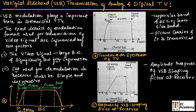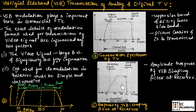Figure C shows the response of the vestigial sideband shaping filter at the receiver. This is the spectrum reproduced by the filter available at the receiver end. As you can see, we have the picture carrier along with the sound carrier with the traces of the lower sideband. This is the response of the filter at the receiver. With this information, we can reproduce the actual transmitted information.